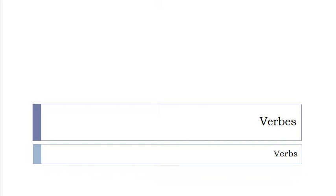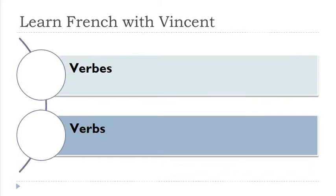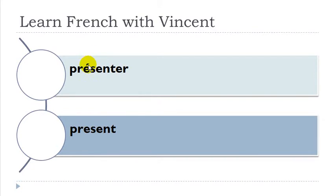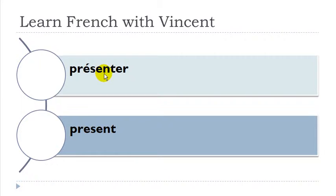Les verbes présentés. Remember, when we've got this accent — accent aigu like that on the top of an 'a' — then you should pronounce it 'a'. And then you combine the two: 'a' and 'n' nasal gives you 'en'.